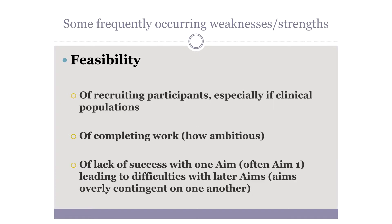Feasibility of recruiting participants is huge. Shelley mentioned the dynamic between the power problem and funding — if you cannot find 30 people with well-specified Broca's aphasia and can't convince people that's believable, you're in very big trouble.